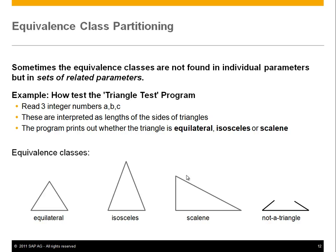Sometimes things are trickier, because equivalence classes are not founded in individual parameters but in sets of related parameters. A well-known example is the triangle test program: consider a program that reads three integers A, B, C — interpreted as lengths of the sides of triangles — and the program prints out whether the triangle is equilateral, isosceles, or scalene, as shown in the figures below.